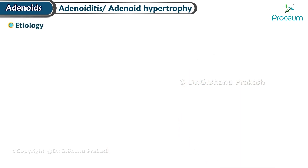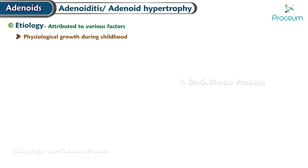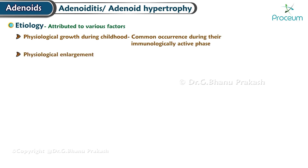Etiology: The etiology of adenoid enlargement can be attributed to various factors. Physiological growth during childhood is a common occurrence during their immunologically active phase. Physiological enlargement of adenoids typically peaks between the ages of two and four.